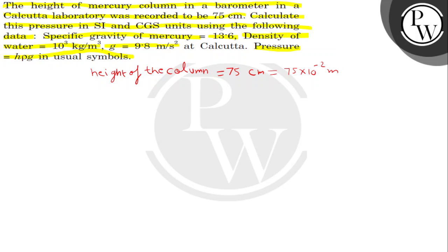Density of mercury is also given. Density of mercury, how much? It is given as 13.6 into 10 to the power 3 kg per meter cube.